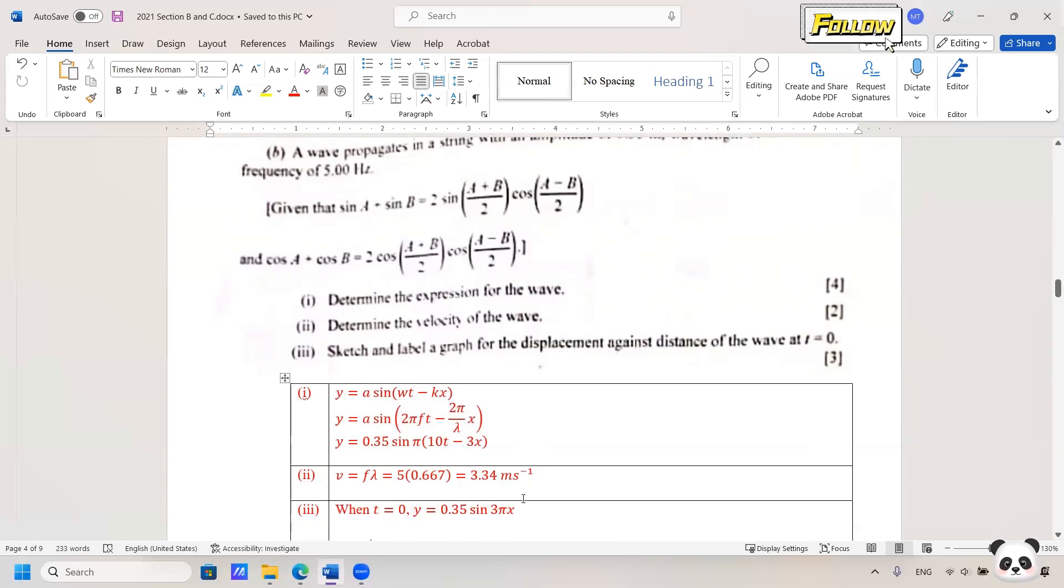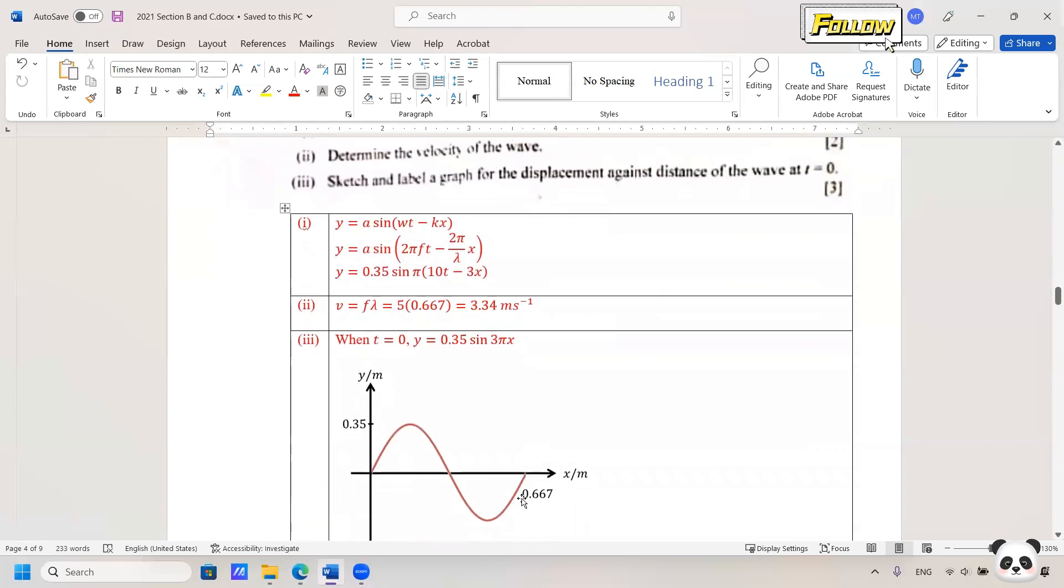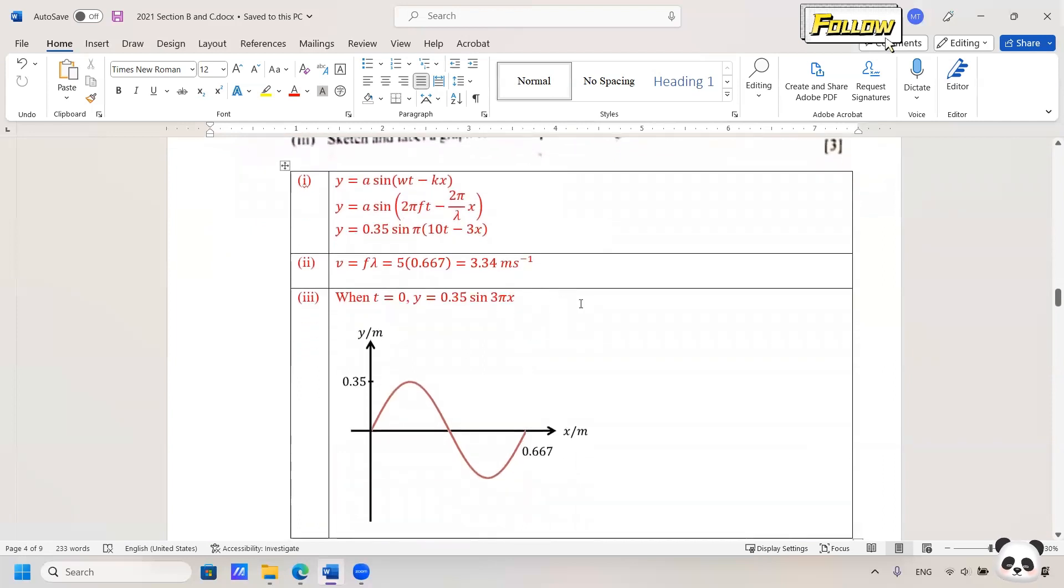From the equation, it should not be a problem to draw the graph - this is the sine graph. You need to label the amplitude 0.35. Since this is distance, the x-axis is showing the distance. A complete wave should be equal to the wavelength, which is 0.667 meter as given in the question.